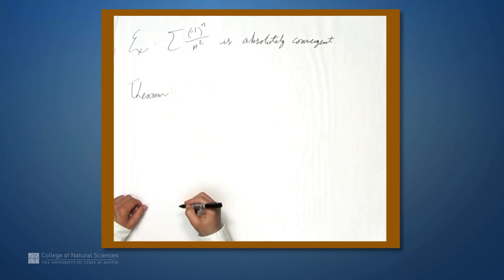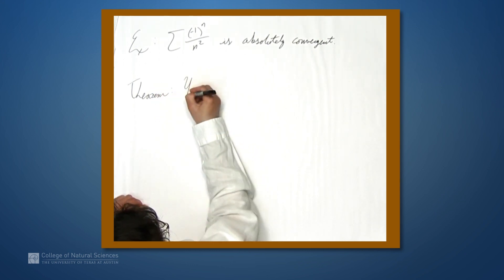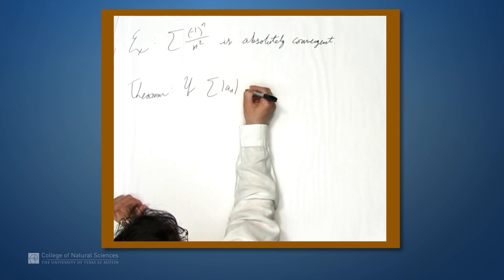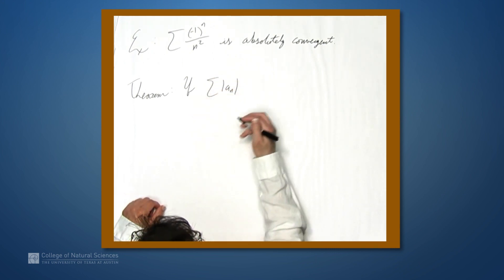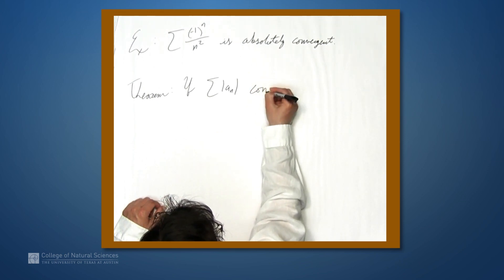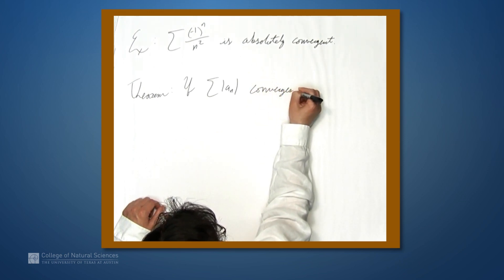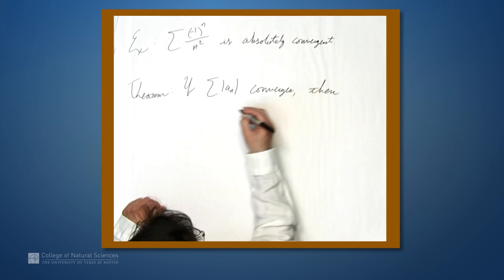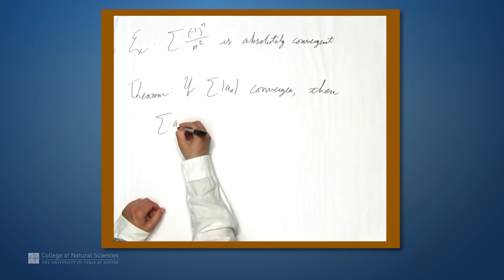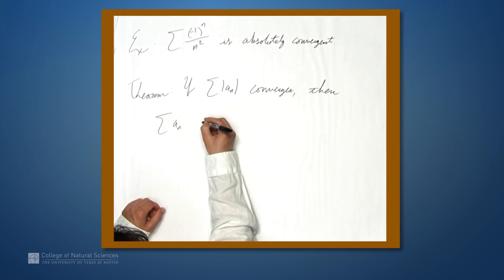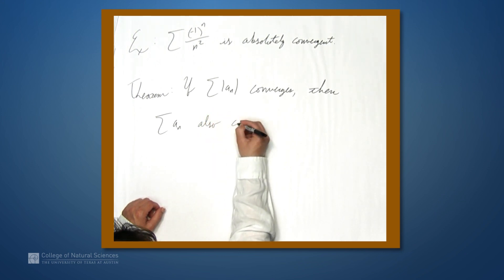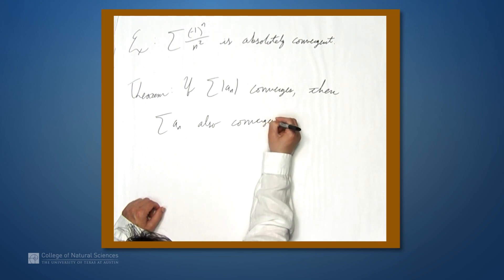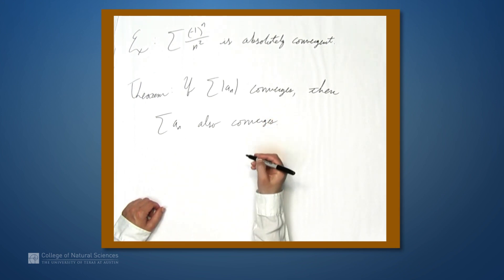There's a very nice theorem we can make use of: if a series is absolutely convergent — if the sum of |a_n| converges — then the original series with just the a_n's also converges.